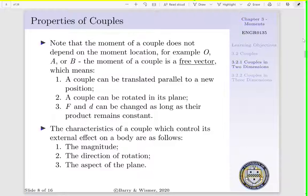The moment of a couple does not depend upon our moment location. That is, in our previous example, it was independent of point O, where we initially took our moment of force about. Nor does it depend upon point A or B. Rather, our moment of couple is a free vector. And by free vector, we mean that a couple can be translated parallel to a new position. As long as we maintain the same aspect, that is, we do not change our axis of rotation, we can move it.